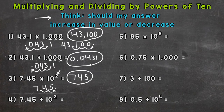Number 4, we're dividing, so we're moving the decimal to the left two times. Look at our exponent: 1, 2 — and we end up with 745 ten-thousandths.